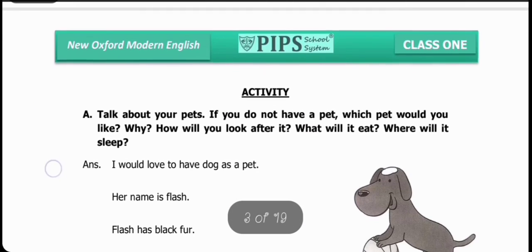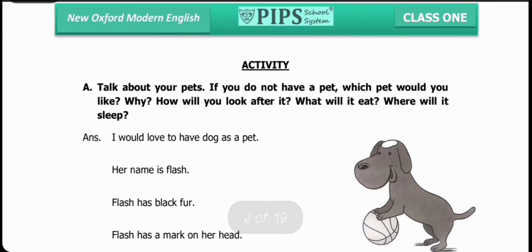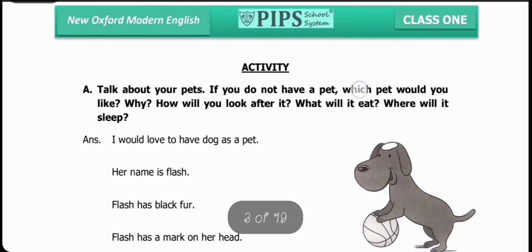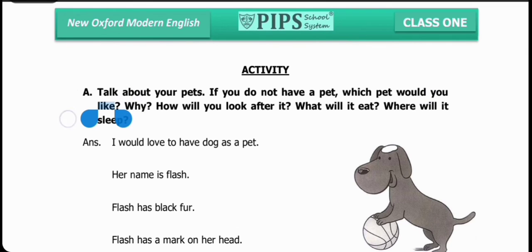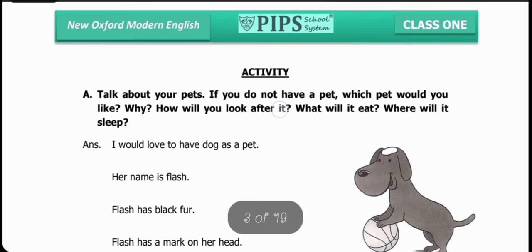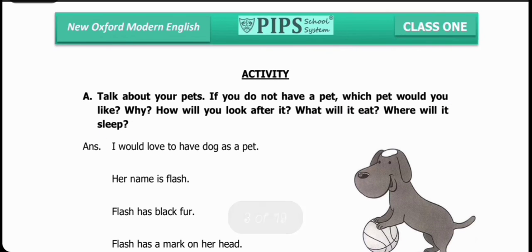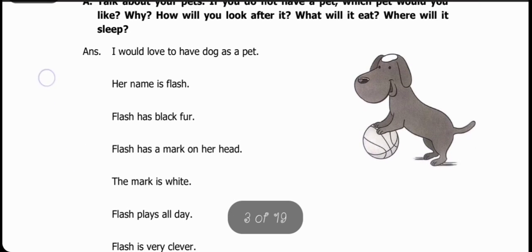Next question is activity from workbook. Talk about your pets. If you do not have a pet, which pet would you like? Why? How will you look after it? What will it eat? Where will it sleep? You have to talk about your pets. If you don't have a pet, which pet would you like to keep at home and why? How will you care for it?